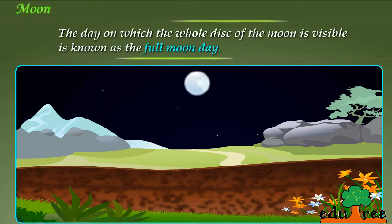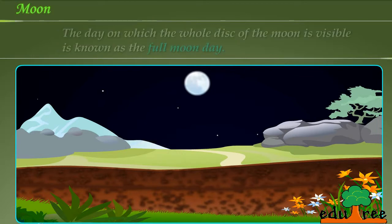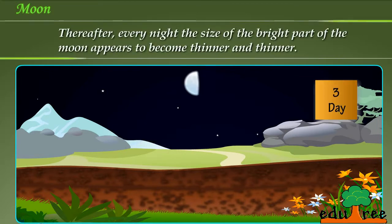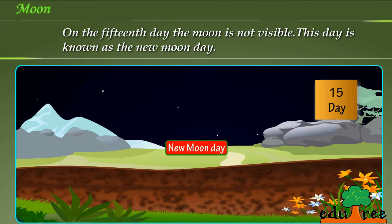The day on which the whole disk of the moon is visible is known as the full moon day. Thereafter every night, the size of the bright part of the moon appears to become thinner and thinner. On the 15th day the moon is not visible. This day is known as the new moon day.